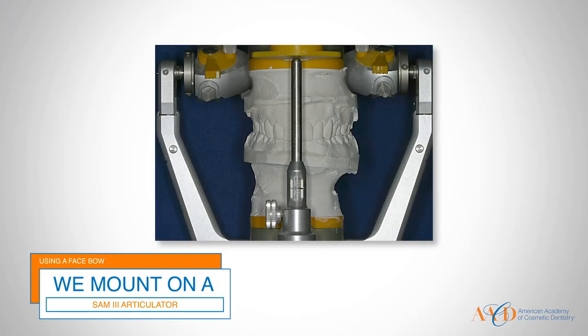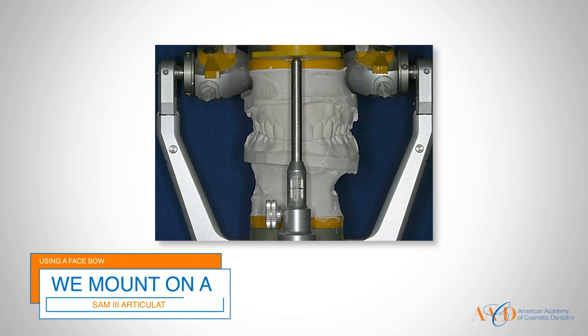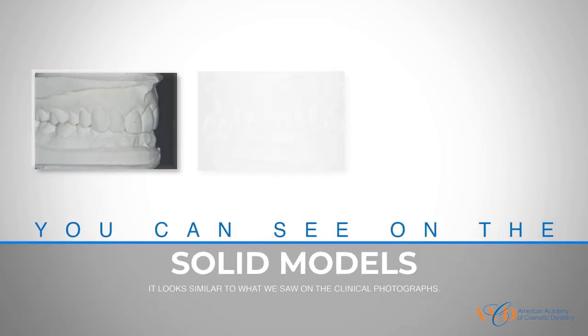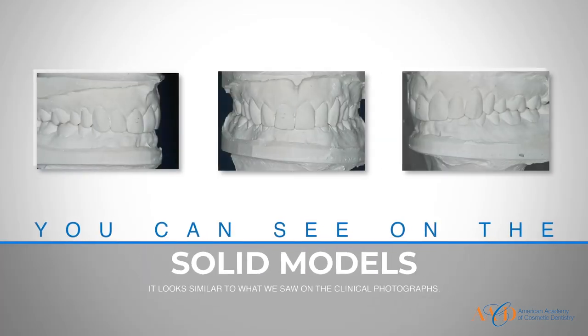So we mount Sam's case. We take alginates, pour up the models, and using a facebow, mount on a SAM 3 articulator. Then using a bite registration, we bring the lower cast to the upper cast. This is his occlusal setting on the SAM 3 articulator, and you can see on the solid models that it looks similar to what we saw in the clinical photographs.